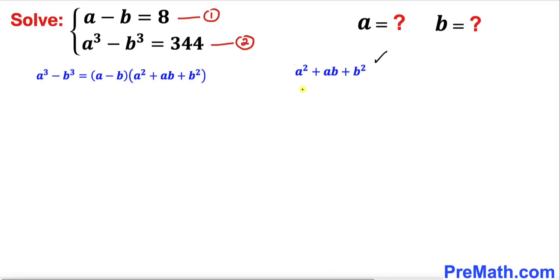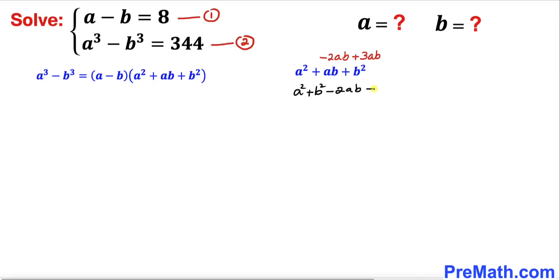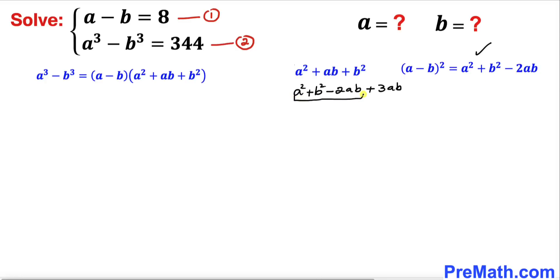Let's go ahead and manipulate this expression. I can combine a squared plus b squared together. For the ab term, I can write it as negative 2ab plus 3ab. Now let's recall the identity: a minus b, whole square, equals a squared plus b squared minus 2ab. So I am going to replace that part by a minus b whole square, and then write plus 3ab.